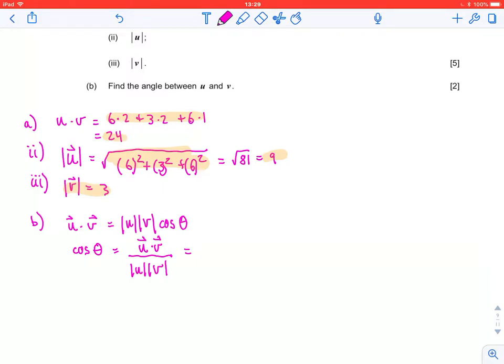We already have the dot product because we did that in part a. So this is going to be 24 up top. In the denominator, we have the magnitude of u, which is 9, times the magnitude of v, which is 3. This ends up just being 8 ninths. And so to find theta, we're just going to use inverse cosine. So the exact value, inverse cosine of 8 over 9. And if you are in degree mode, you'll get something like 27.26604 degrees.